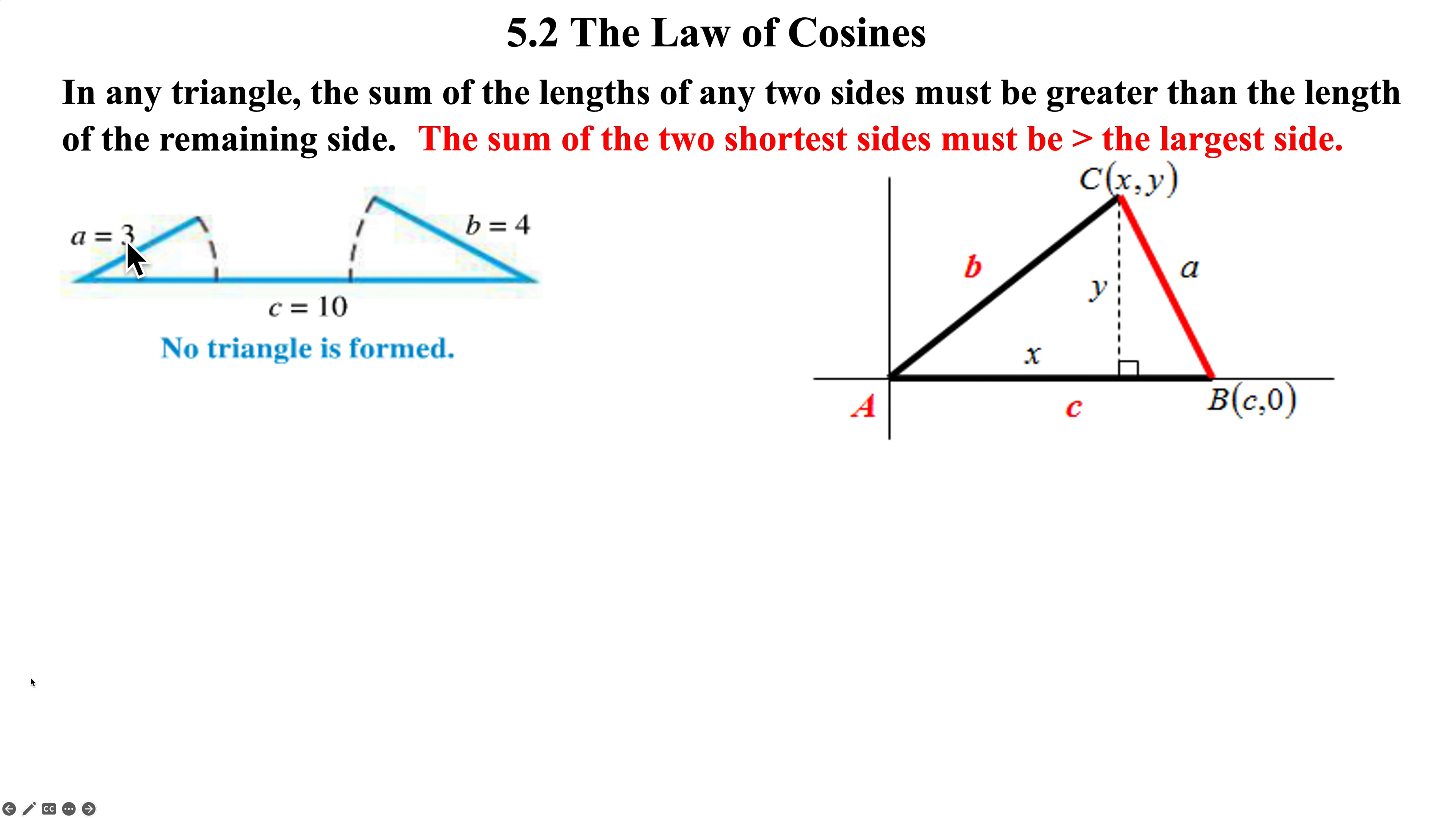So side of A, which is 3, side B, which is 4, side C, which is 10, you need to get 3 and 4 to have more length to it. So it's got to go over 10 so these two sides can meet somewhere above the base of the triangle.